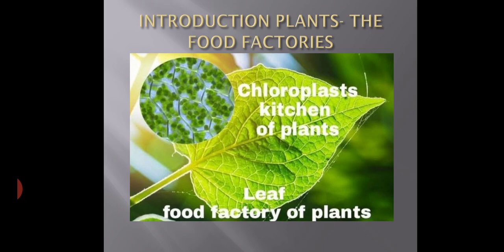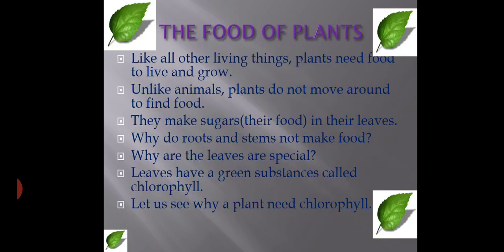The chlorophyll pigment is present in the leaf. Like all other living things, plants need food to live and grow. The plant is called a producer because it makes its own food by the process of photosynthesis, and all living things depend on plants.